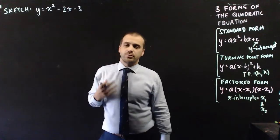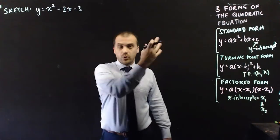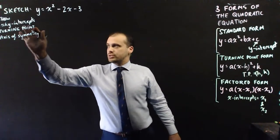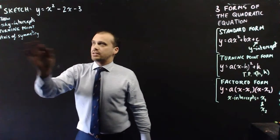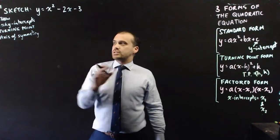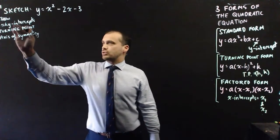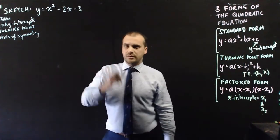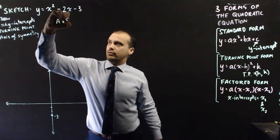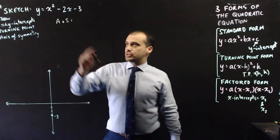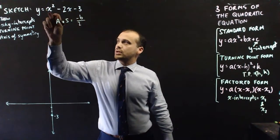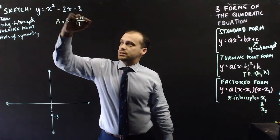I've got one here in standard form that I want to sketch. No matter what form you're in, you still want to show some key points — the x and y intercepts, the turning point, and the axis of symmetry. Looking at this quadratic, we can see straight away that the y-intercept is going to be negative 3. Now if I want to find my axis of symmetry, that's going to be equal to negative b over 2a.